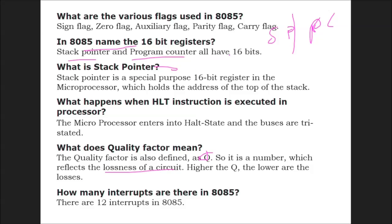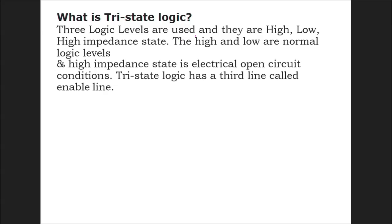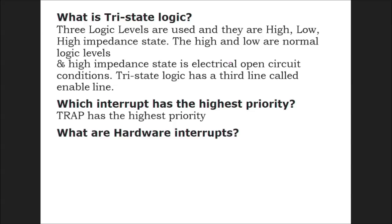How many interrupts are there in 8085? There are 12 interrupts in 8085. What is tri-state logic? We've seen this. Which interrupt has highest priority? TRAP. What are hardware interrupts? TRAP, RST 7.5, RST 6.5, RST 5.5, and INTR.